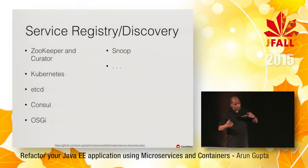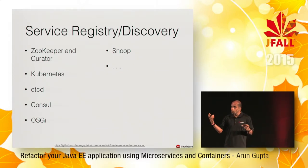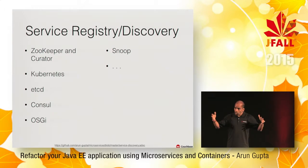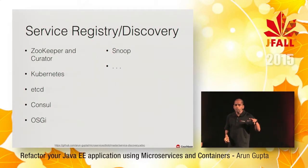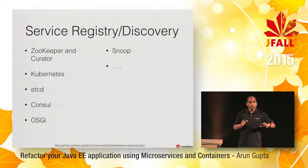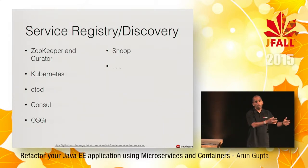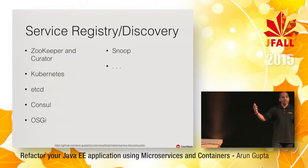For service registry, there are a few options. A lot of people use ZooKeeper — it's a very common tool, though a bit complicated. There is a framework built on it called Curator. ZooKeeper typically scales well but the code gets complex with failure and recovery. etcd and Consul are other examples. Snoop is another example that is purely community-driven — a service registry and discovery mechanism purely written using Java EE. You take a WAR file, deploy it in your Wildfly container, and your service registry and discovery are up.